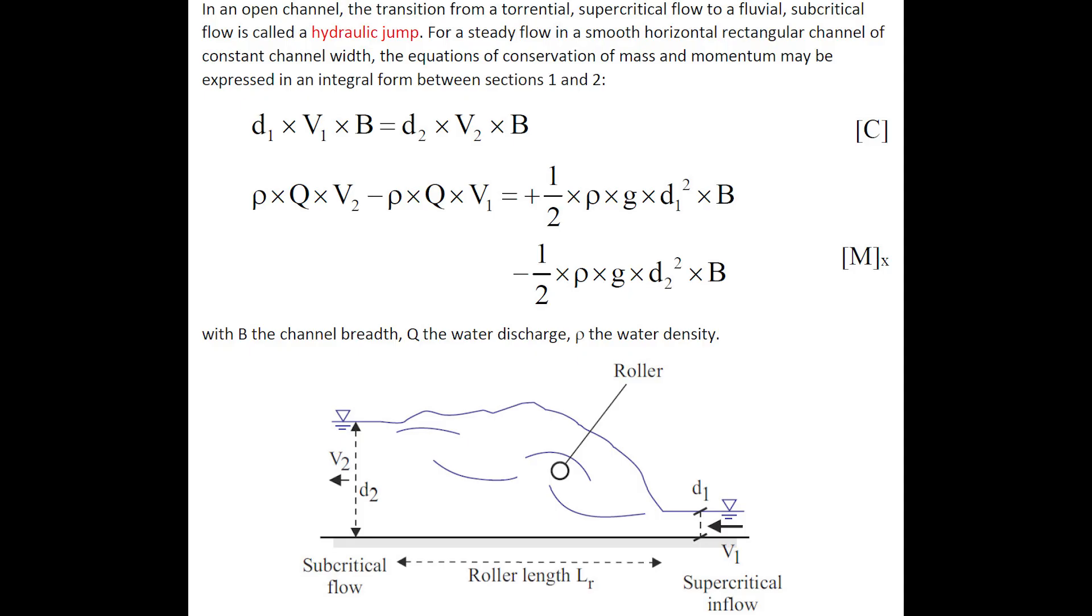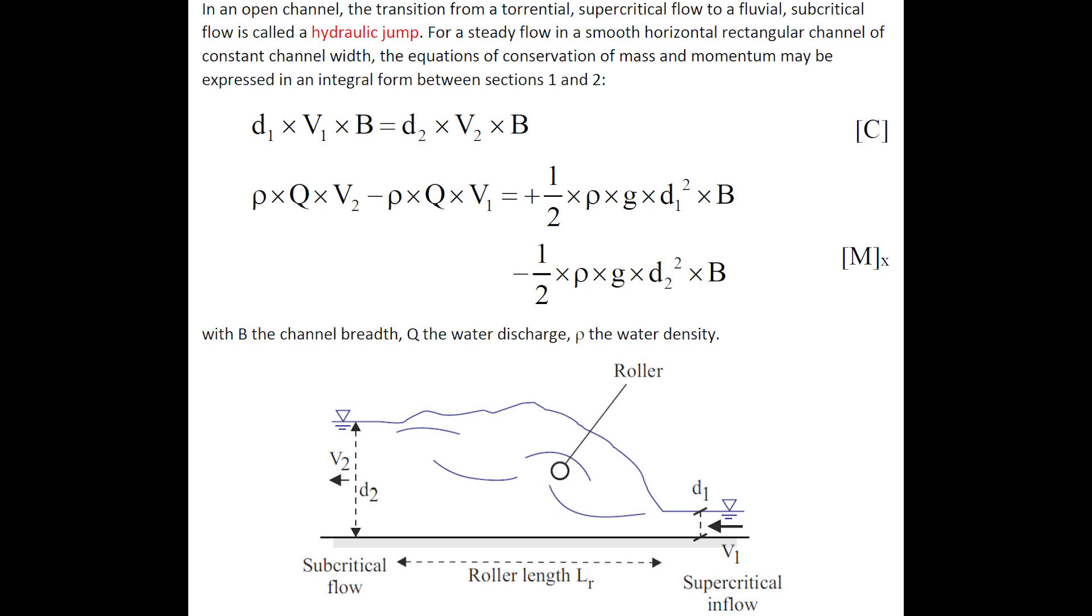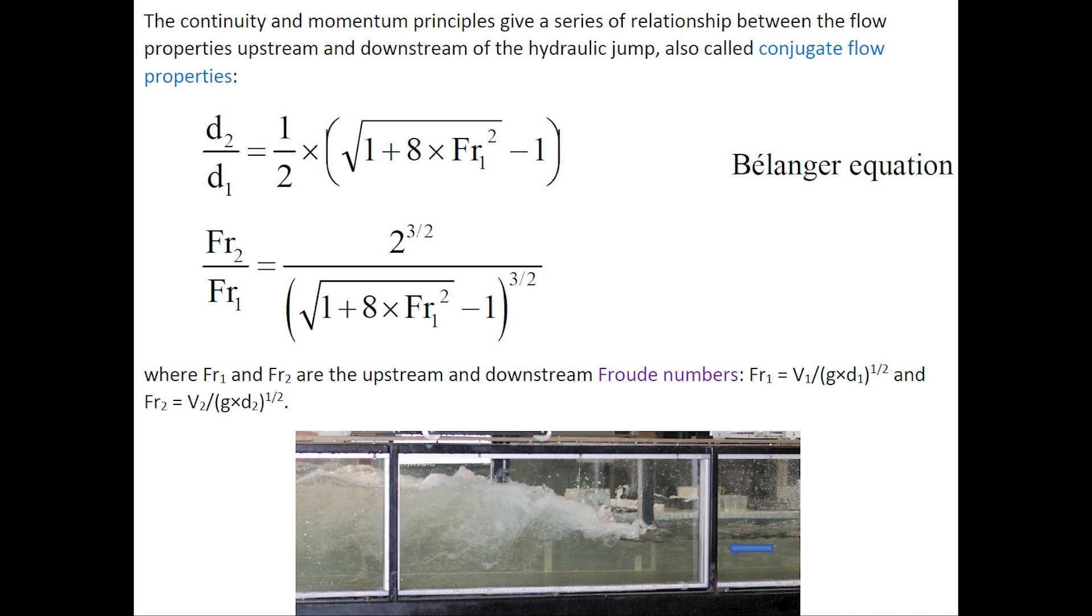In an open channel, the transition from a supercritical to a subcritical flow is called a hydraulic jump. For a smooth, horizontal, rectangular channel of constant width, the application of the equations of conservation of mass and conservation of momentum between sections 1 and 2 yields the classical Bélanger equation, the ratio of the conjugate depths.